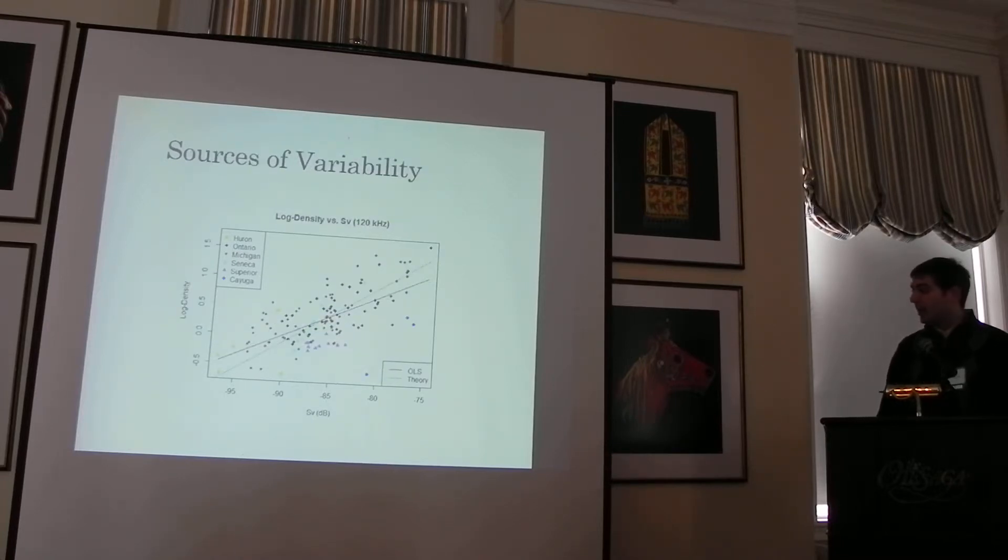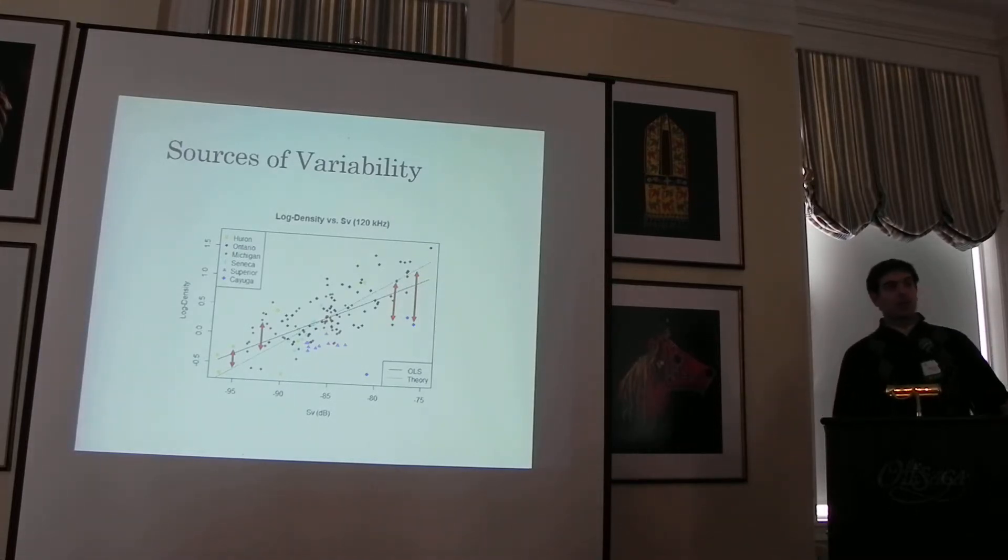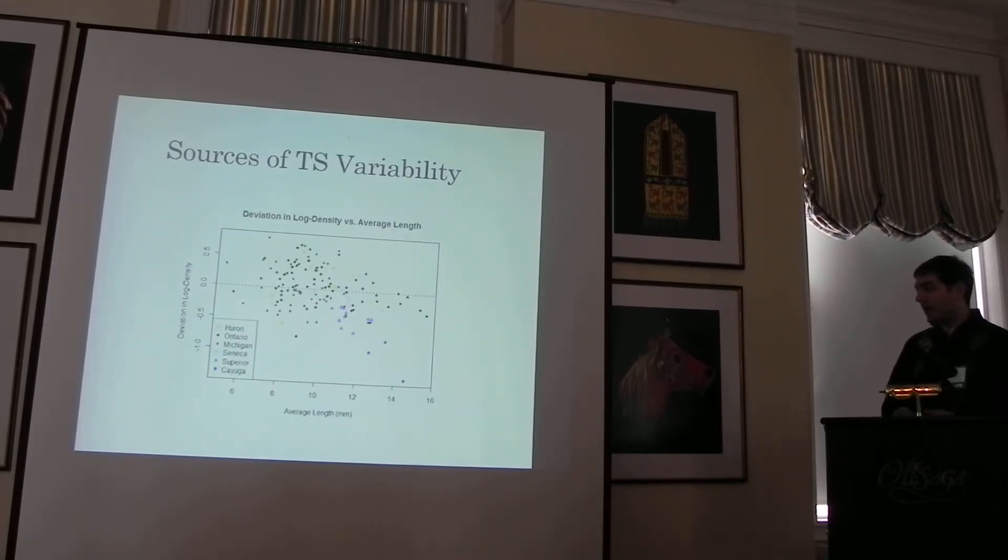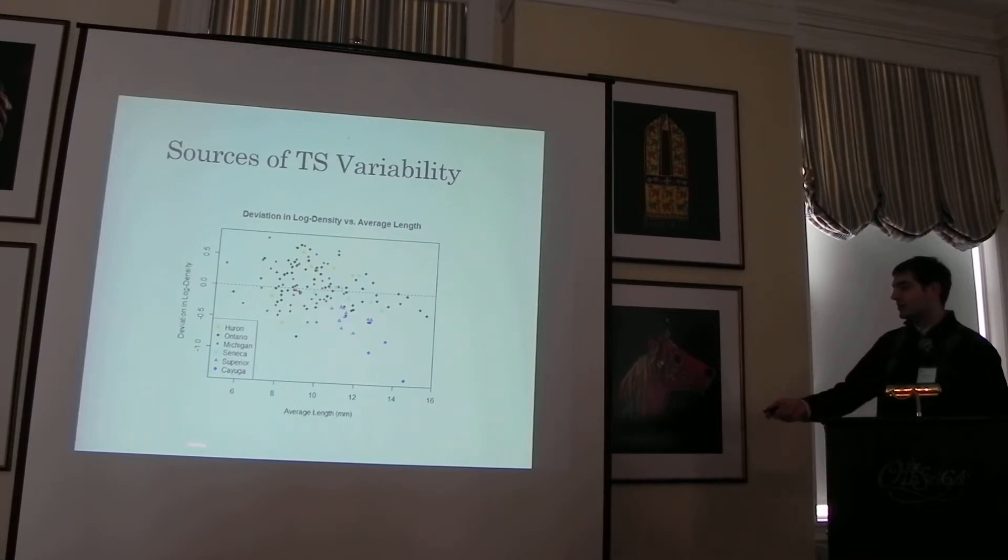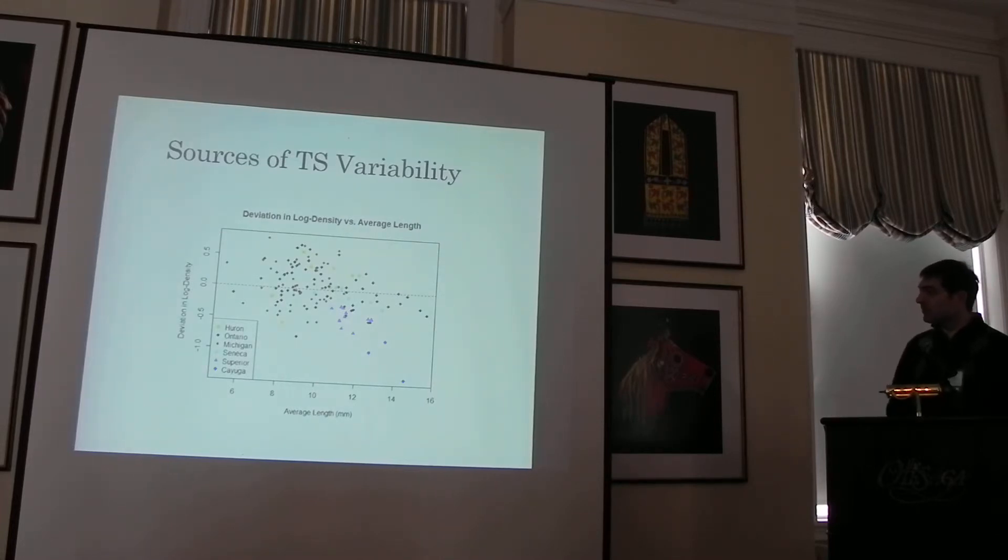Taking a step back from the scattering model now to look at the wild density versus the SV data again. If you take the residuals to the theoretical line, what you'll have is a scattering of target strength deviations. Because the slope of the line is supposed to be 0.1 and any intercept is target strength, if you just move the line up and down, you're seeing differences in target strength. We take these residuals and plot them and we see how target strength differs. You can plot that versus average length, which you would expect to be the main influencer of target strength. You do see a negative correlation in a relationship.